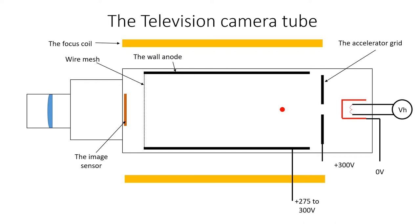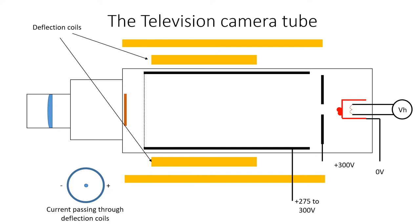Deflection coils are placed around the tube. As explained earlier, when an electric current is passed through a coil, it creates a magnetic field. However, in this case the coils induce a magnetic field across the tube. This causes the electron beam to be deflected and the electrons hit a different part of the image sensor.